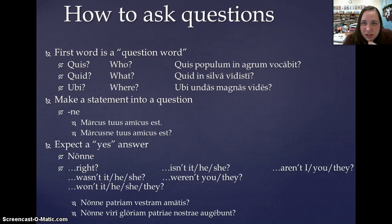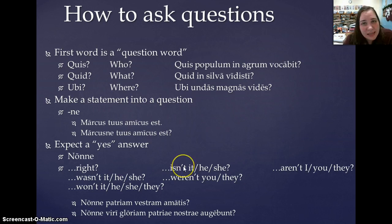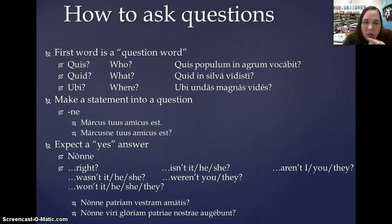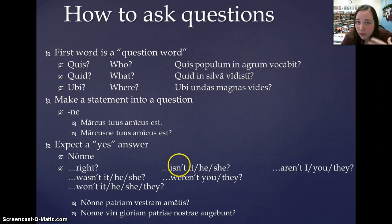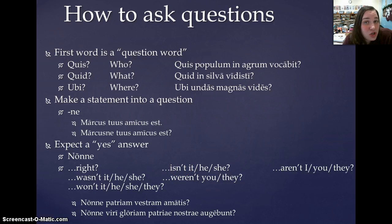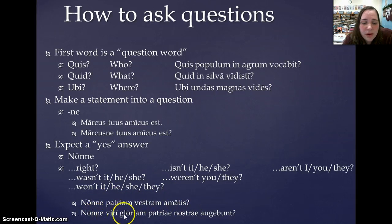We form questions that expect a yes answer by adding things like 'right,' 'isn't he,' 'isn't she,' 'you are going to school today, aren't you?' or 'they will be coming to my party, won't they?' — things that lead the hearer or reader to think the correct answer should be yes. For example: nonne patriam vestram amatis, and also nonne viri gloriam patriae nostrae augebunt.